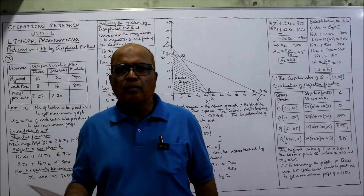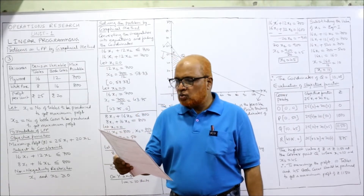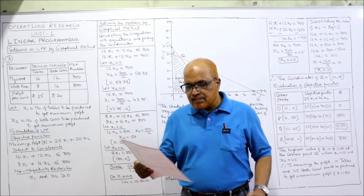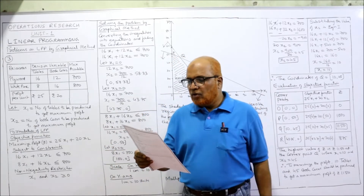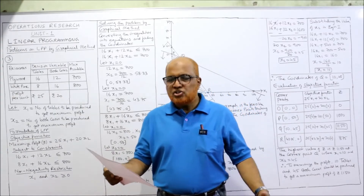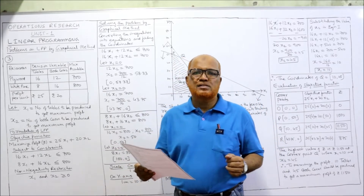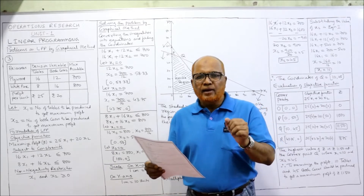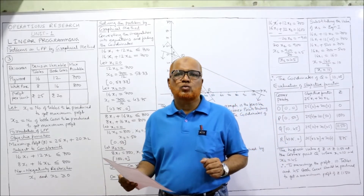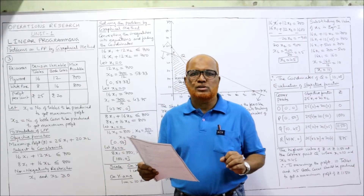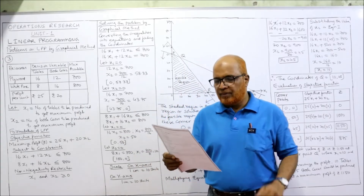Now see problem number 3. Upon completing the construction of his house, Mr. Natarajan discovers that 700 square feet of plywood scrap and 800 square feet of white pine scrap are in unusable form. He has constructed a house and after completing it some scrap is left — plywood scrap available is 700 square feet, and white pine scrap available is 800 square feet. This is the maximum availability of resources.